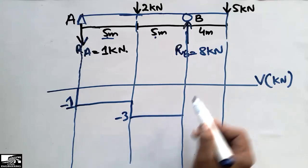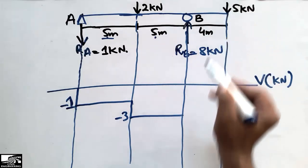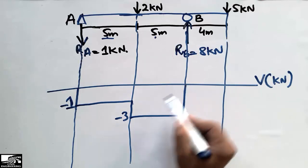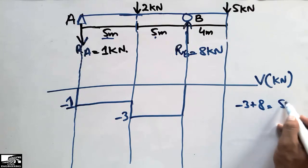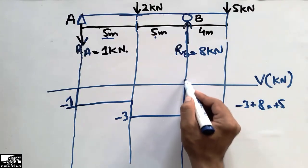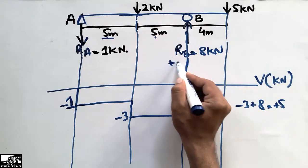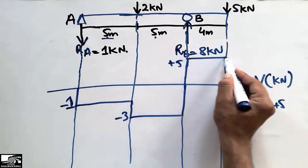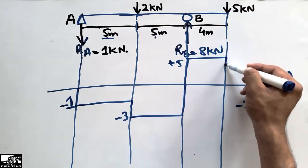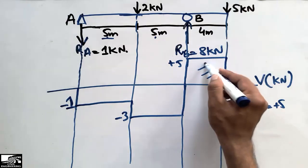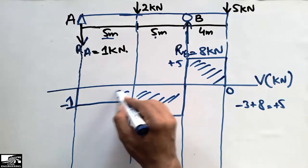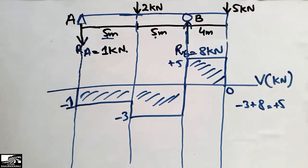Continuing: there is no force for a while, then RB = 8 kN acts upward, so we add 8 to −3, giving +5 kN. The shear force stays at +5 kN, then the 5 kN load acts downward, bringing it back to 0. This completes the shear force diagram.